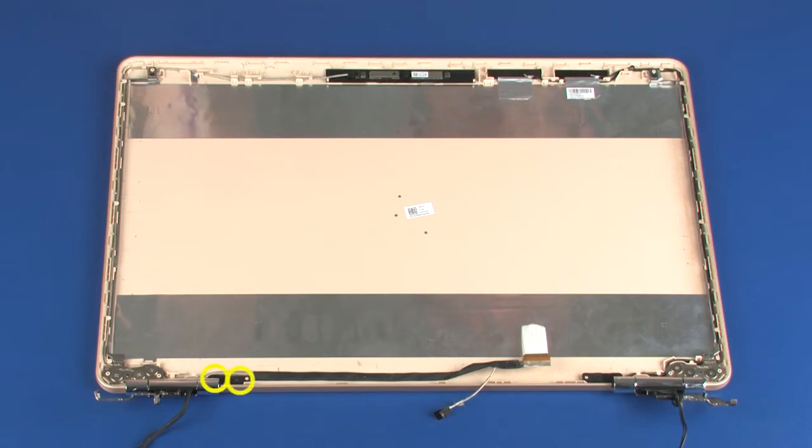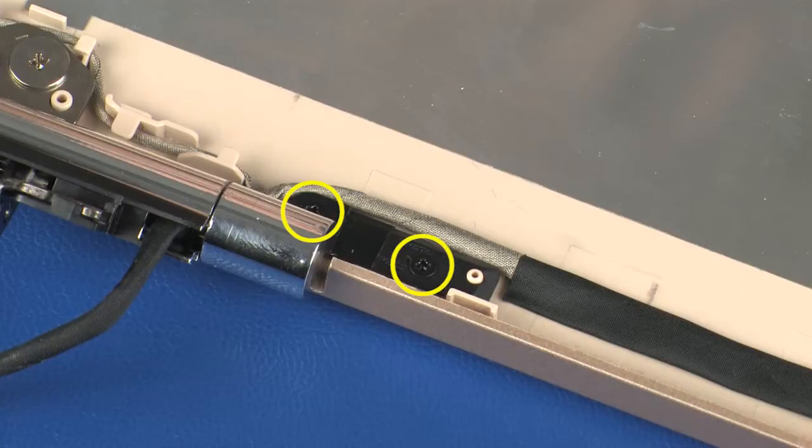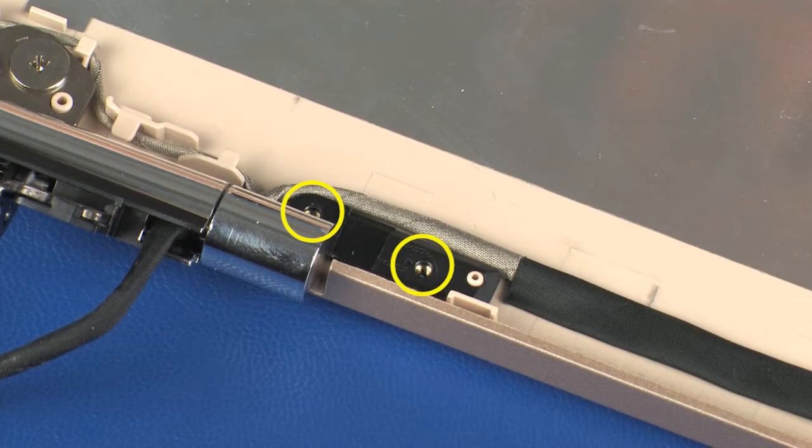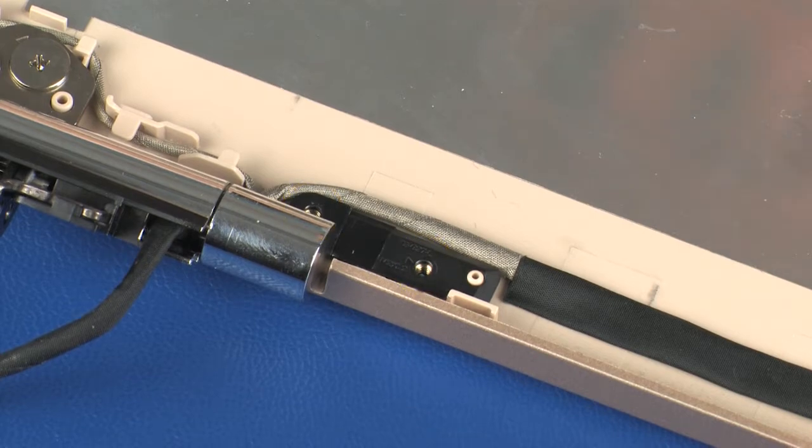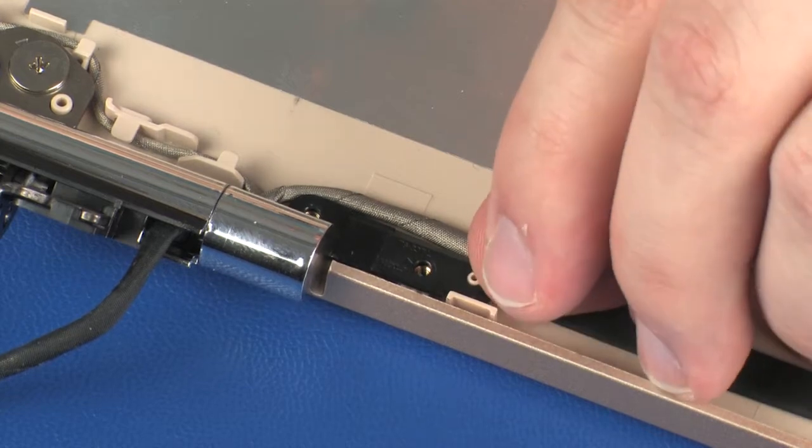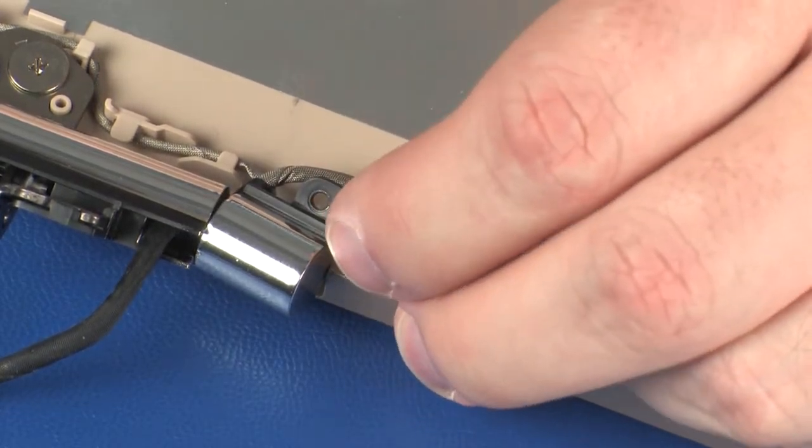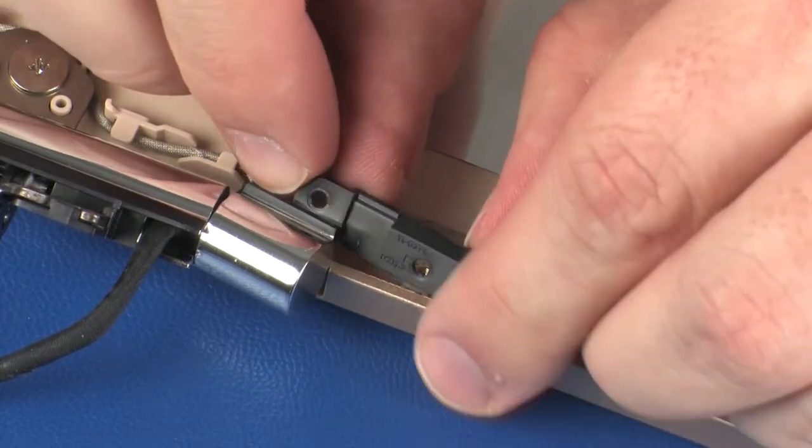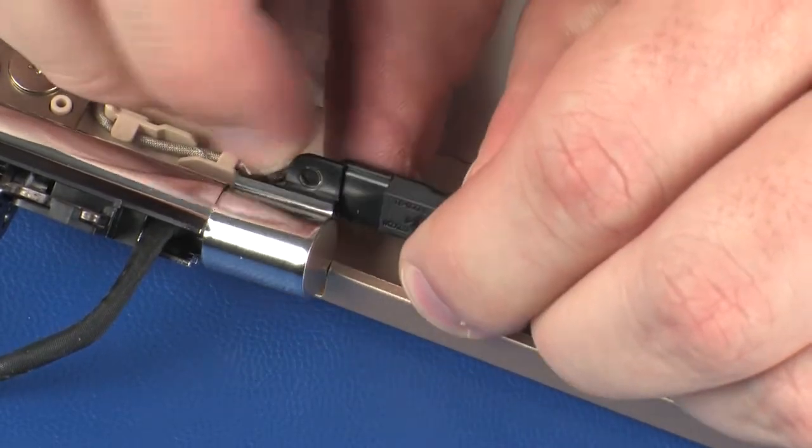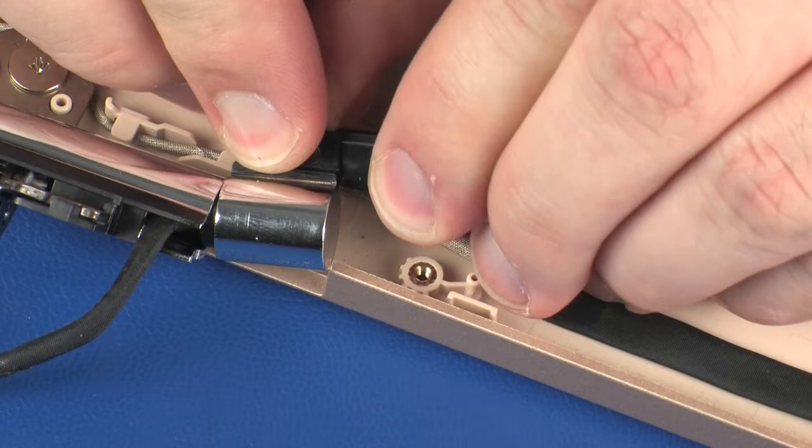Remove the two 2.5mm P1 Phillips-head screws that secure the left hinge cover to the display enclosure. Lift the left hinge cover off of the alignment pin on the display enclosure, slide the left hinge cover out of the left display panel hinge, and remove the display panel cable from the routing channel in the left hinge cover.